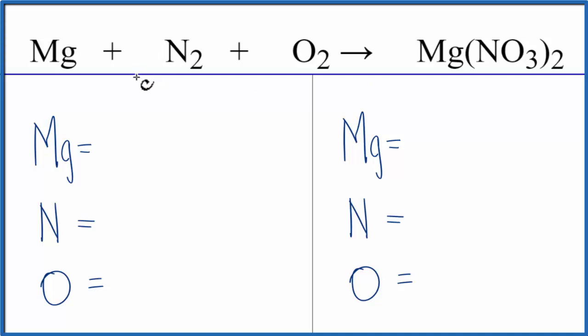Let's add the atoms up on both sides of the equation. We have one magnesium, two nitrogens, and two oxygens.